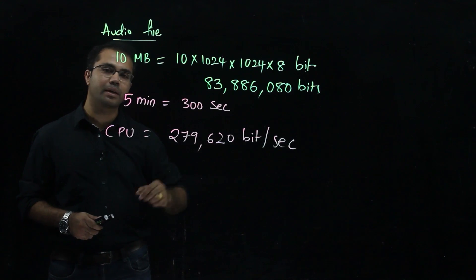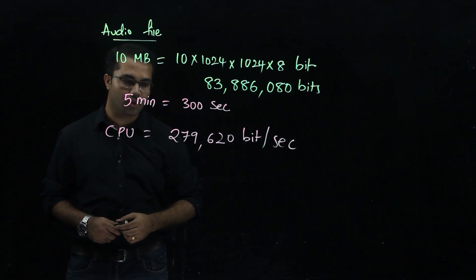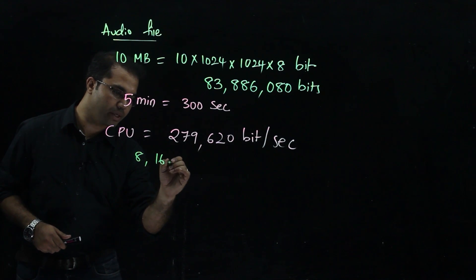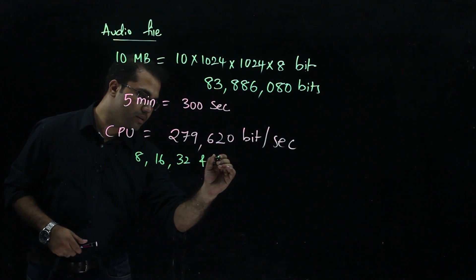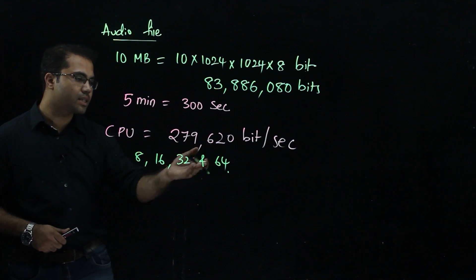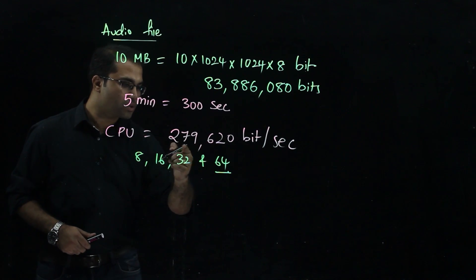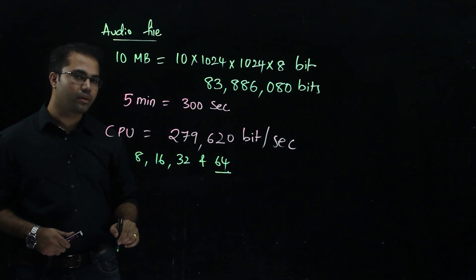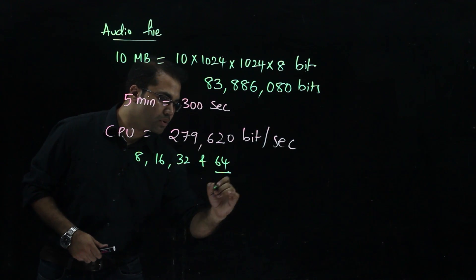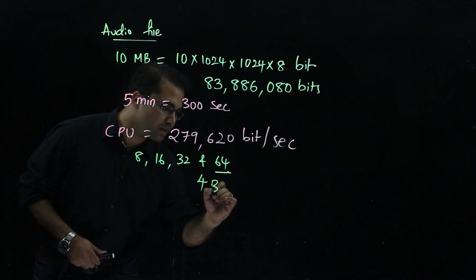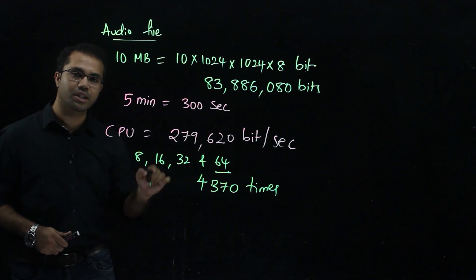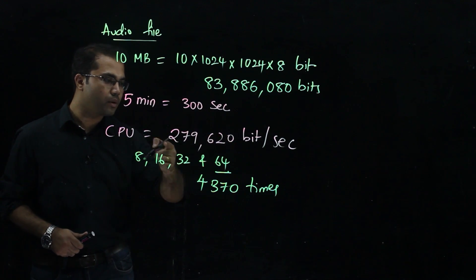There are so many bits to execute, but there is a limitation in the CPU because CPUs available in the market come in fixed sizes — 8-bit, 16-bit, 32-bit, or 64-bit. The most advanced computers use 64-bit CPUs. Let us take 64-bit in our example. In order to execute 279,620 bits per second, whereas in a single run the CPU can execute only 64 bits, the CPU has to run almost 4,370 times per second to finish the task.